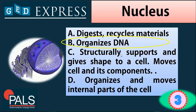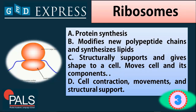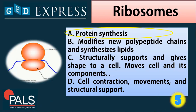Next question: ribosomes — A. Protein synthesis, B. Modifies new polypeptide chains and synthesizes lipids, C. Structurally supports and gives shape to a cell and moves the cell and its components, or D. Cell contraction, movements, and structural support. The answer is A — protein synthesis. Ribosomes are the ones that synthesize protein inside the cell.